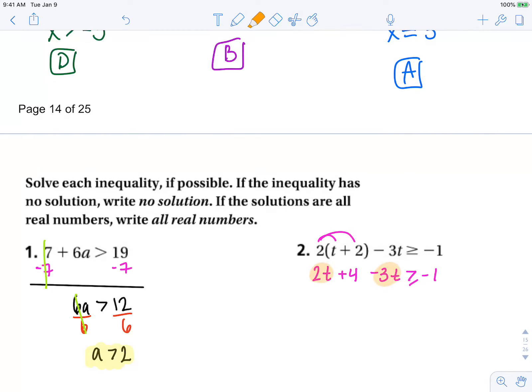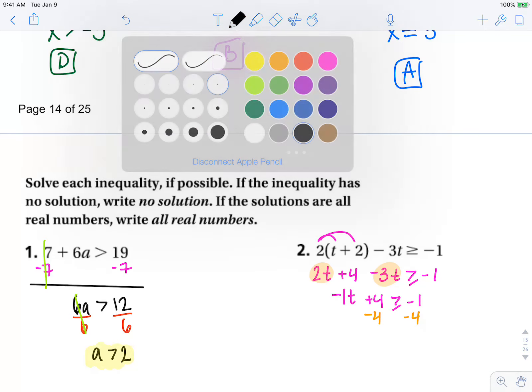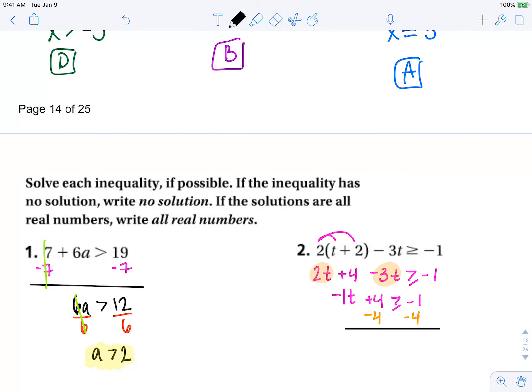Combine like terms: -t + 4 ≥ -1. Now subtract 4 from both sides. These fours cancel and we have -1t ≥ -5.